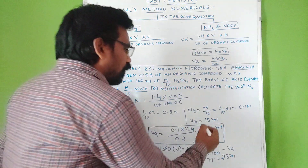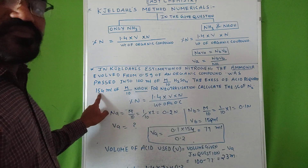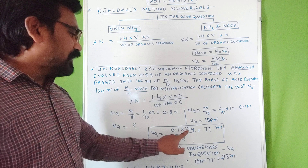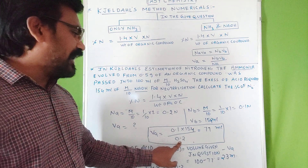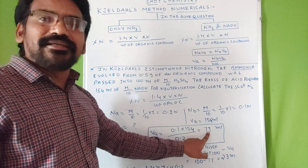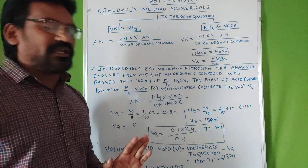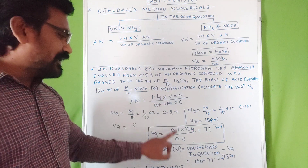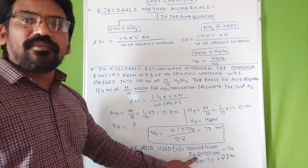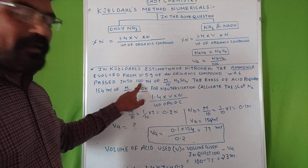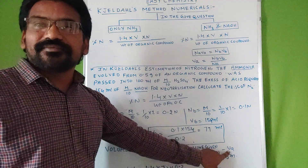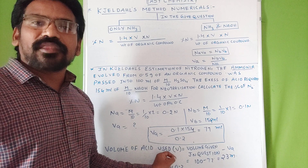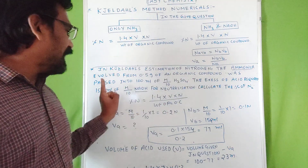VB (volume of base) is 154 ml as given. So VA = NB × VB ÷ NA = 0.1 × 154 ÷ 0.2 = 77 ml. This means 77 ml of acid was neutralized by 154 ml of NaOH. The volume of acid used equals the total acid given (100 ml) minus the volume neutralized by NaOH (77 ml). This is the crucial step when solving numericals with ammonia and NaOH present.